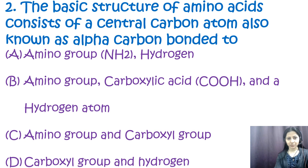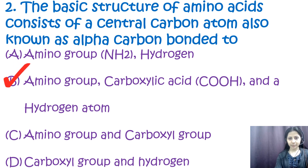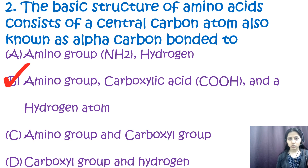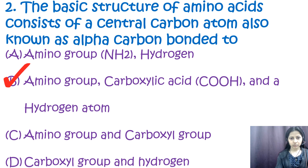Question number two: the basic structure of an amino acid consists of a central carbon atom, also known as the alpha carbon, bonded to which groups? Options are: a) amino group and hydrogen, b) amino group, carboxylic acid, and hydrogen atom, c) amino group and carboxylic acid, d) carboxylic group and hydrogen. The correct option is b. The alpha carbon is bonded to an amino group on one side, a carboxylic group on the other side, and a hydrogen atom.